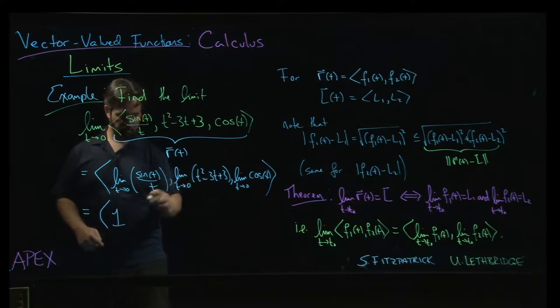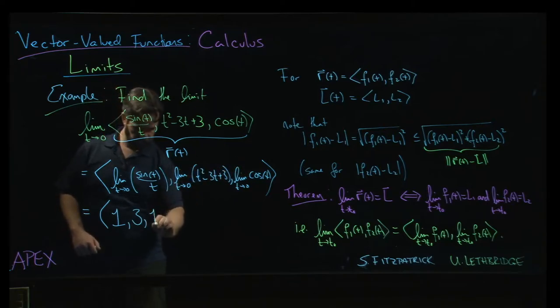Polynomials are continuous, so we can do direct substitution and we get 3. Cosine is continuous. Cosine of zero is 1.